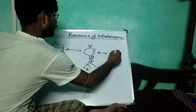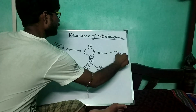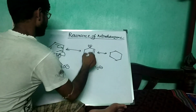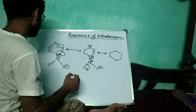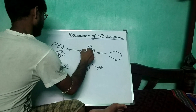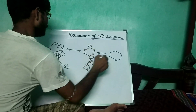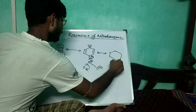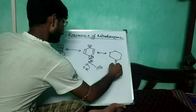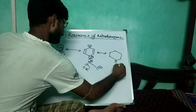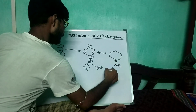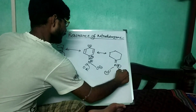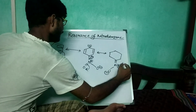So in the next step, the structure becomes double bonded N-plus, O-minus, and O-minus.